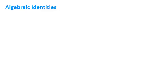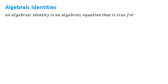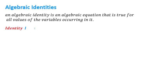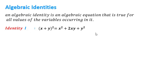Now let us see what is an algebraic identity. An algebraic identity is an algebraic equation that is true for all values of variables occurring in it. For example, the first identity is (x + y)² = x² + 2xy + y². You can take any value of x and y and the left hand side and right hand side will give the same result. So this is an identity — an algebraic equation which is true for all values.